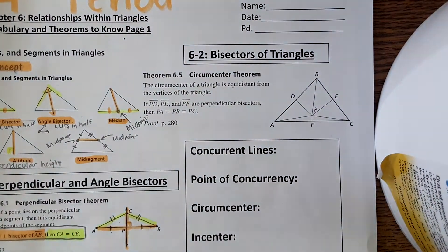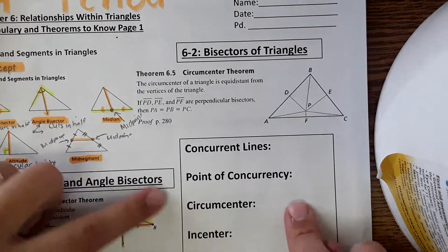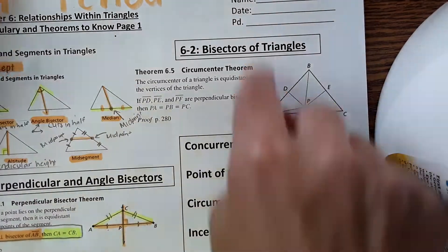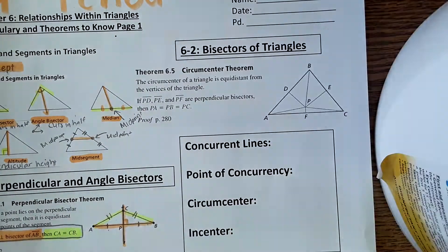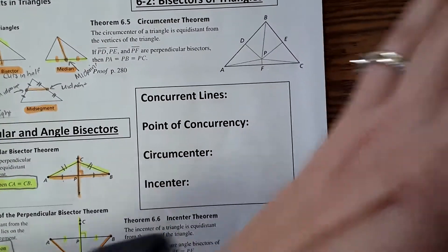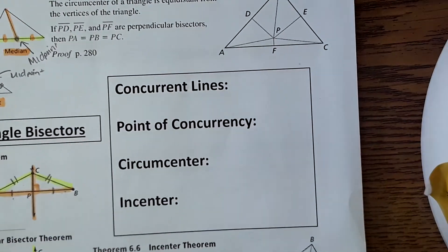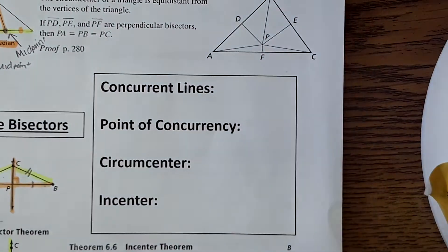Today we're using both perpendicular bisectors and angle bisectors in the lesson. I'm going to start with the vocabulary before going to the theorem, starting with concurrent lines.